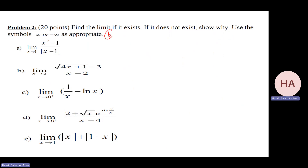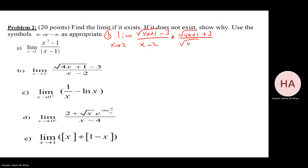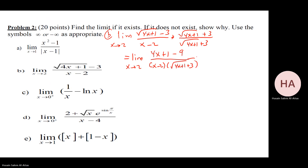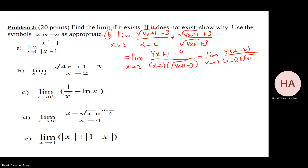Part b: limit as x goes to two. Rationalize. We get the limit of four x plus one minus nine over x minus two, which is four x minus eight, or four times x minus two. After cancellation, we get four over the square root of four times two plus one at x equals two: square root of nine equals three, giving four over six, which is two over three.